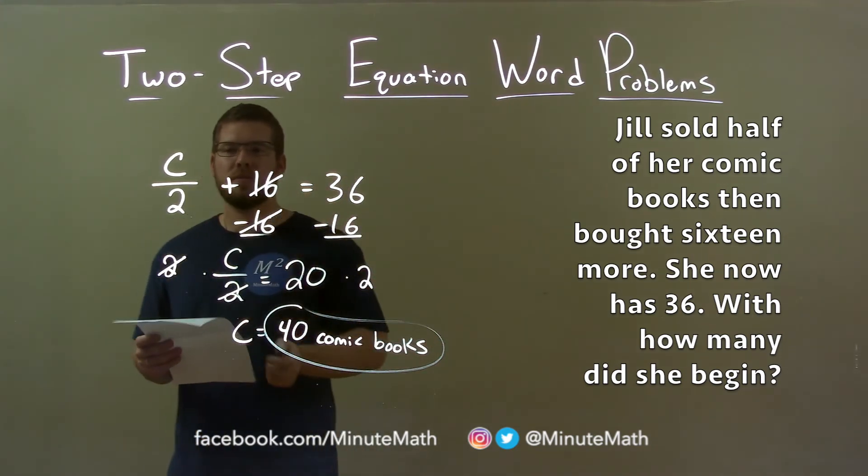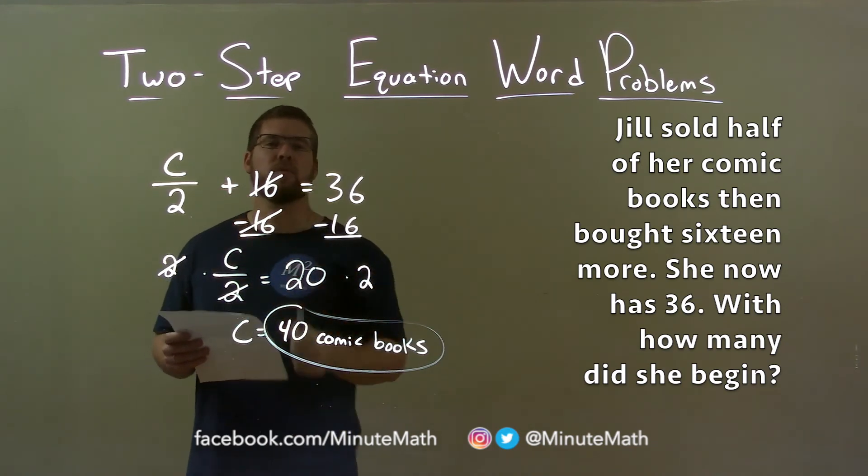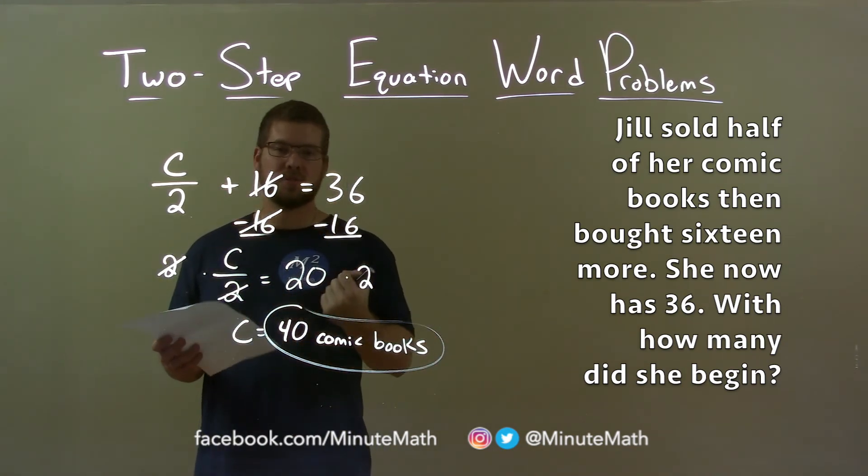With that information, we created the equation C over two plus 16 equals 36, and C represents the number of comic books she started with. We solved for C and got our final answer of 40 comic books.